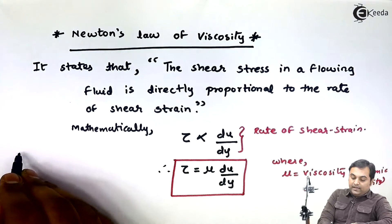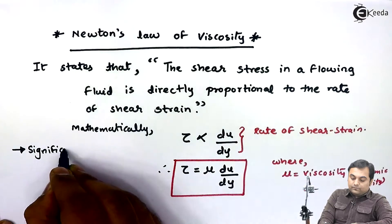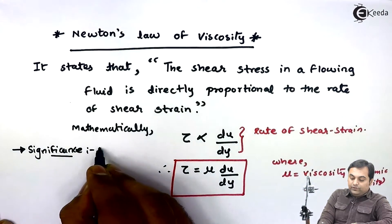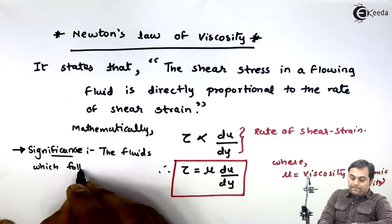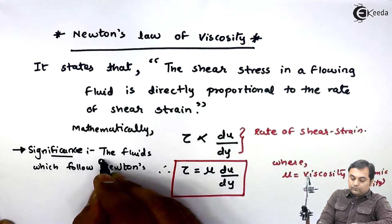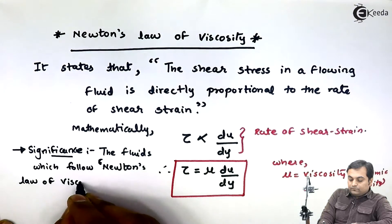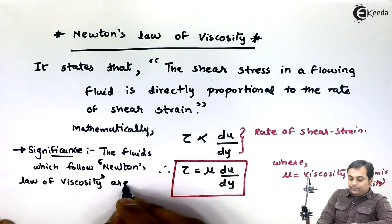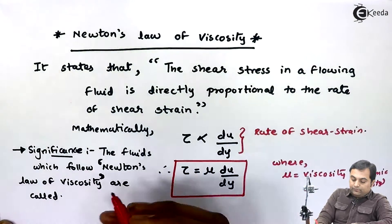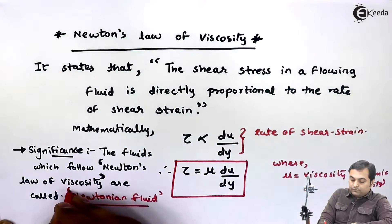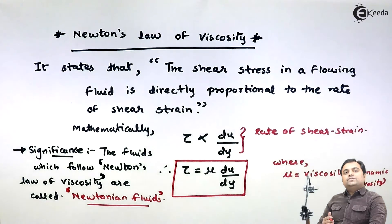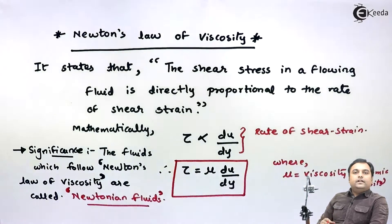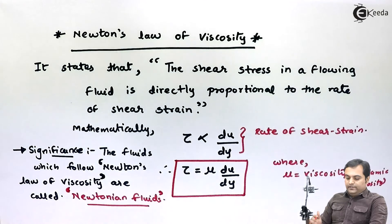The significance of Newton's law of viscosity is that fluids which follow it — where shear stress is directly proportional to the rate of shear strain — are called Newtonian fluids. So, if a flowing fluid follows this law, it is classified as a Newtonian fluid.